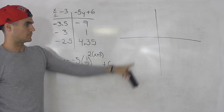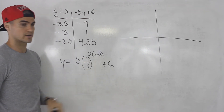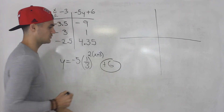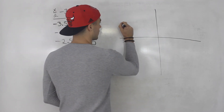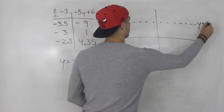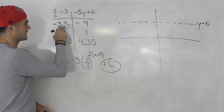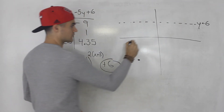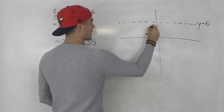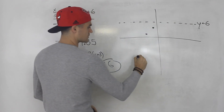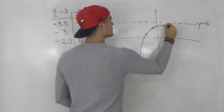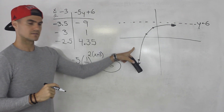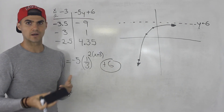Now we take those values and graph them. This transformed table is for the final function. For exponential functions, we always start by plotting the horizontal asymptote, which is the c value — in this case y = 6. Then we plot the three points: (−3.5, −9), (−3, 1), and (−2.5, 4.35), and draw the curve through them.